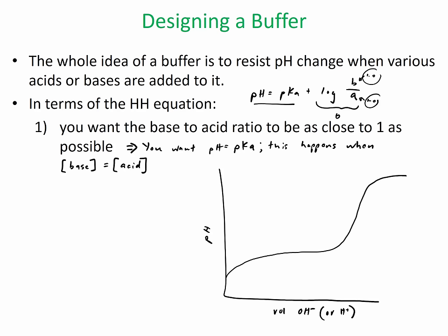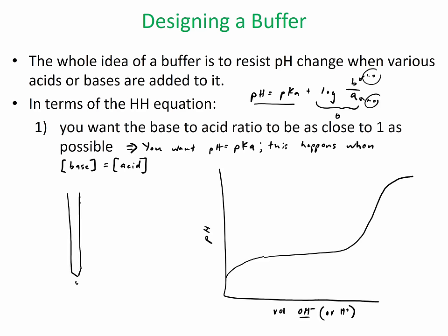So typically the pH curve will look like this — this is if you started with acid and you added base over time. When you titrate, you have your burette and then some OH⁻ is coming out, being added to a beaker. Inside the beaker, you have the conjugate acid-base pair — you have HA and A⁻. This right here is known as the buffer region.